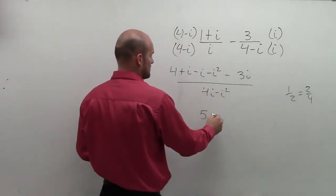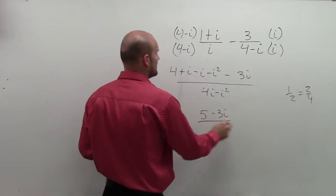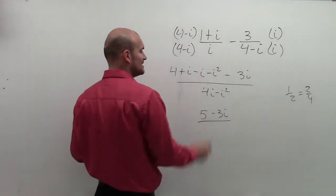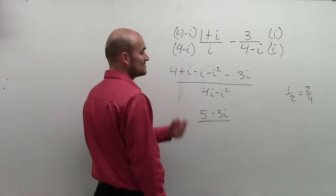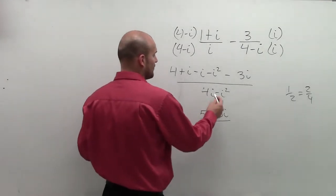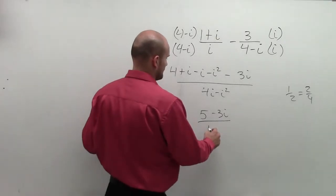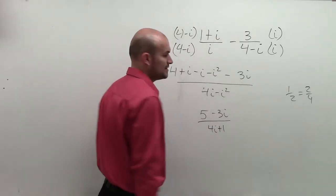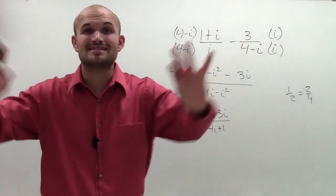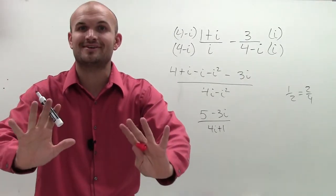So we have 5 minus 3i. And then on the bottom here, I can represent this as an i squared, which is negative 1. But it's minus a negative 1, so it's a positive 1. So I'm going to have 4i plus 1. And then you're like, all right, we're done, good. Whoa, stop. Don't turn off the video yet. Hold on.